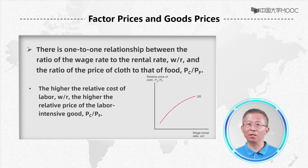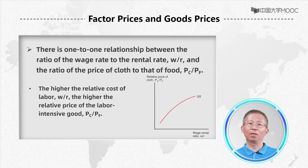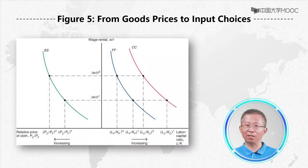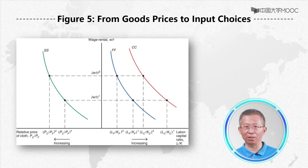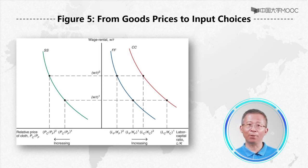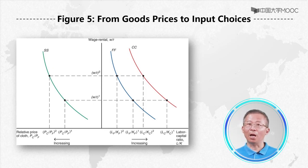The relationship is illustrated by the upward-sloping curve SS. Look at figure 4. Now putting the SS curve and the relative factor demand curves together in figure 5, we can find a surprising linkage between Pc/Pf and the ratio of labor-to-capital, L/K, used in the production of each good.